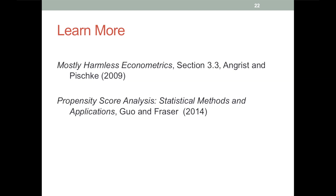If you want to learn more about estimation methods like matching that use propensity scores, I highly recommend section 3.3 of Angrist and Pischke's excellent book 'Mostly Harmless Econometrics.' For even more information, you might want to take a look at Guo and Fraser's book on propensity score analysis.